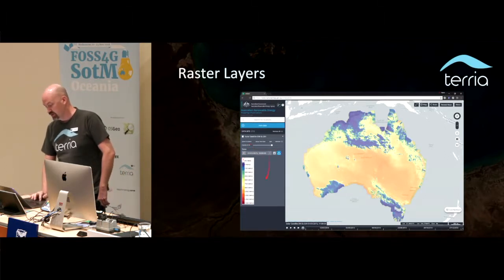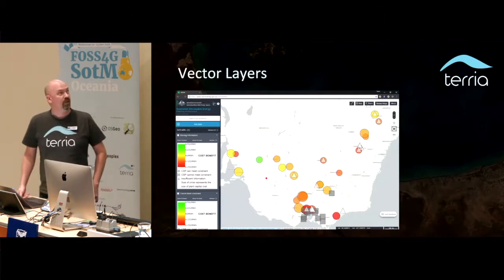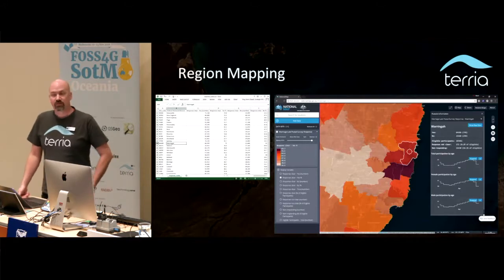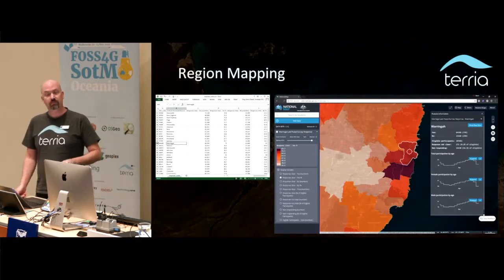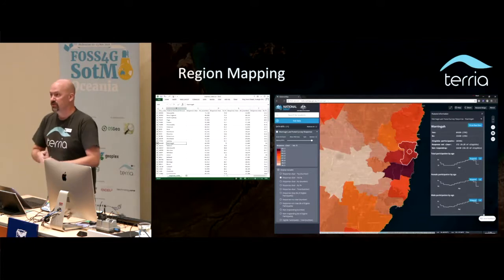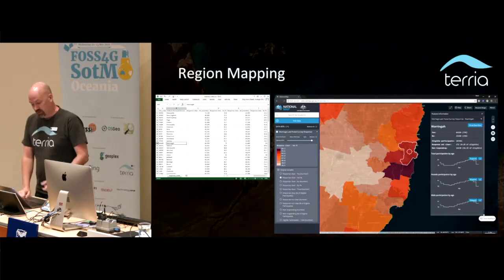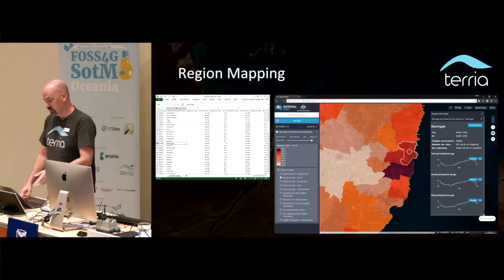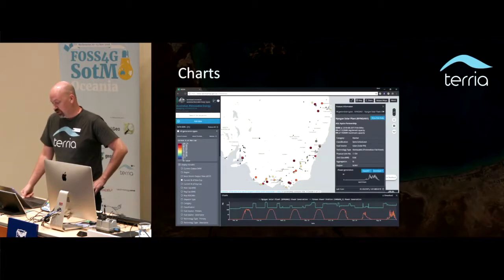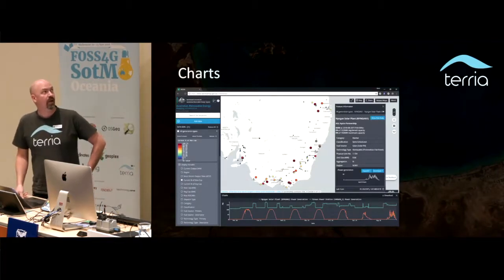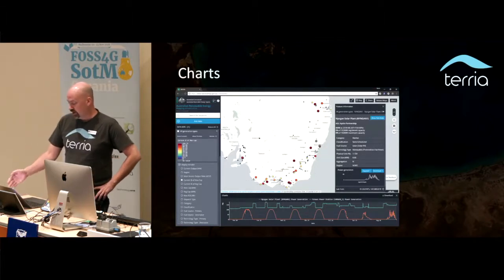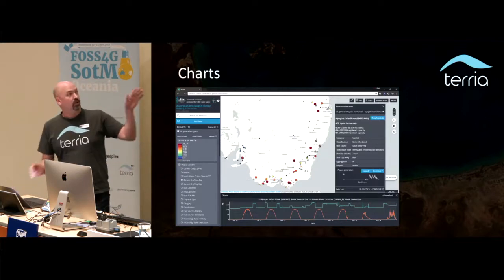Things are a bit different here — we have a time control. We can show vector layers, and raster layers and vector layers together. We can do region mapping: if you have a CSV file or Excel spreadsheet with a postcode column, you can drag and drop that on the map, and we'll fill in the postcodes, LGAs, SA regions, or whatever you have. We did a map specifically for the marriage equality survey. We can show charts — here we're showing real-time power generation from big power stations in Australia. Every five minutes we get another generation value, and this chart ticks along.